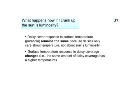So we could break this down in some words. What happens if we crank up the sun's luminosity? Well, the daisy cover response to surface temperature, the parabola, remains the same because daisies only care about temperature, not about the sun's luminosity. But the surface temperature response to daisy coverage changes. In other words, because there's more solar radiation coming to the surface of the Earth, the same amount of daisy coverage is associated with a higher temperature. So that's why we have this upward translation of that line.